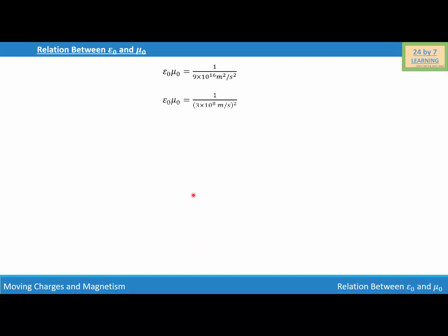Simplifying further, epsilon 0 mu 0 is equal to 1 over 3 times 10 to the power 8 meter per second, whole squared. This is because 9 can be written as 3 squared and 10 to the power 16 can be written as 10 to the power 8 squared, and we already have meter squared per second squared. We know the speed of light is 3 times 10 to the power 8 meter per second, so we substitute and write epsilon 0 mu 0 is equal to 1 over c squared.